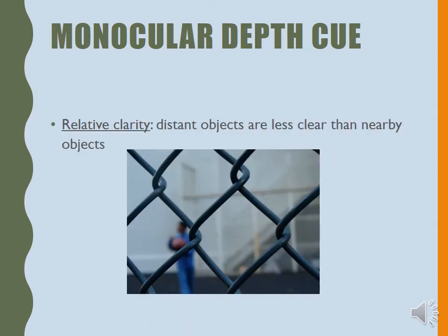Relative clarity states that distant objects are less clear than nearby objects. Think of driving in the country near the mountains — as you look out, the mountains appear hazy, but the road in front of you doesn't look foggy whatsoever. That's relative clarity. Light has to dissipate through more atmosphere to get from trees in the far distance to your eye, so it appears hazier, as opposed to the thing right in front of you.